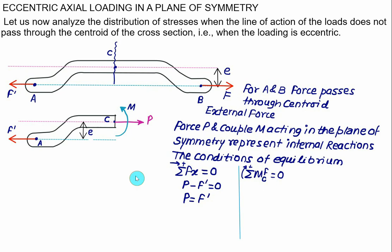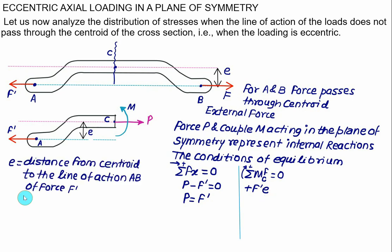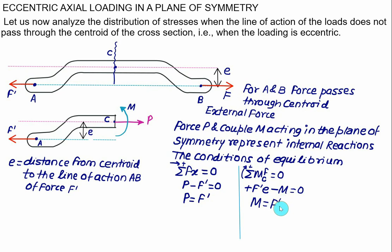Force F prime passing through point A about point C makes a clockwise moment, so it is positive: F prime multiplied by the eccentricity E. E is the distance from the centroid to the line of action AB of force F prime. The moment M is shown anticlockwise, so it is negative. Setting the sum to zero gives M = F prime × E.